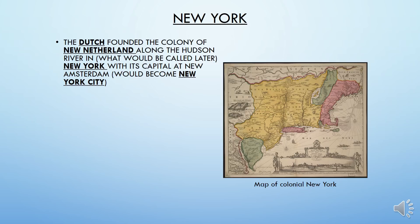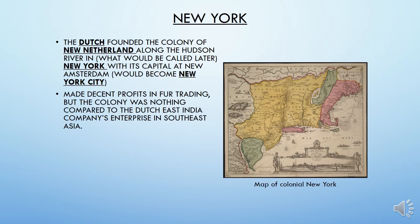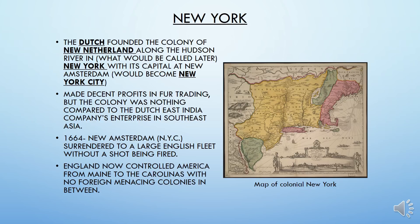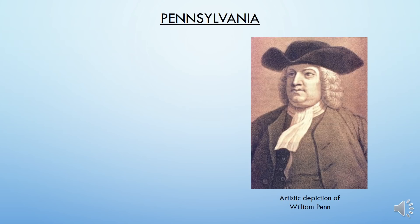The first Middle Colony we'll discuss specifically is New York — a Dutch-founded colony, not English. They called it New Netherland at the beginning, located along the Hudson River. It was later called New York, with its capital New Amsterdam becoming New York City. They made a decent profit in fur trade, but the colony was nothing compared to the Dutch East India Company in Southeast Asia. In 1664, New Amsterdam surrendered to a large English fleet without a shot fired, and England took over New York from the Dutch. England now controlled America from Maine all the way down to the Carolinas with no foreign colonies in between.